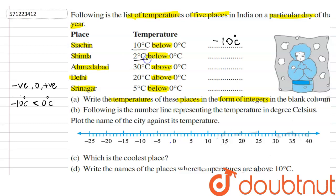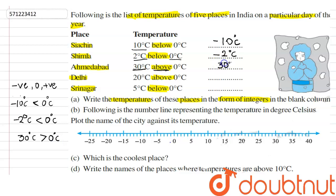Shimla is 2 degrees Celsius below zero, so it is minus 2 degrees Celsius. Ahmedabad is 30 degrees Celsius above zero, which is greater than zero, so its integer value is 30. Delhi is 20 degrees Celsius above zero, so its integer value is 20. Srinagar is 5 degrees below zero — below means negative — so Srinagar is minus 5.